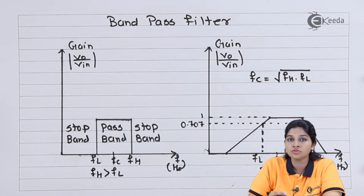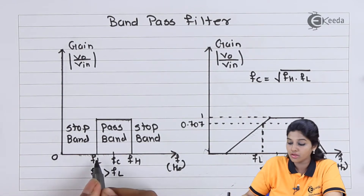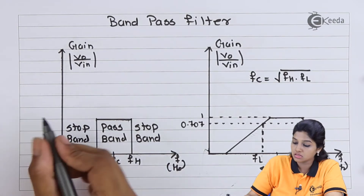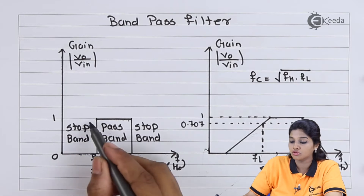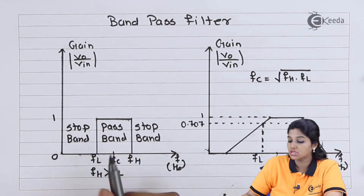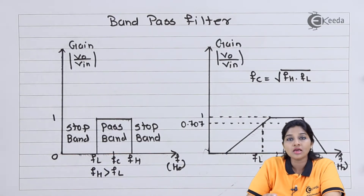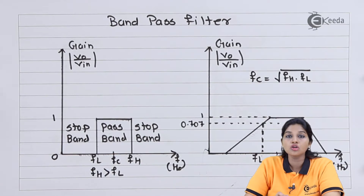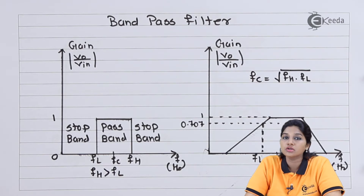From the ideal frequency response, we see that the gain is 0 from 0 to fl. At f equal to fl, the gain suddenly increases to 1 — that means gain makes a sudden transition from 0 to 1. During the frequency range fl to fh, the gain remains 1. At frequency f equal to fh, gain again makes a sudden transition to 0. So during the stop band, the gain of the filter is equal to 0, and during the pass band, the gain of the filter is equal to 1.